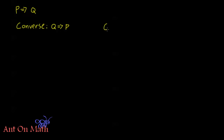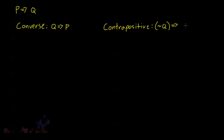And we have something else called the contrapositive. The contrapositive is the statement not Q implies not P. This is called the contrapositive — it's kind of like the converse, but I'm negating both of my propositions Q and P.